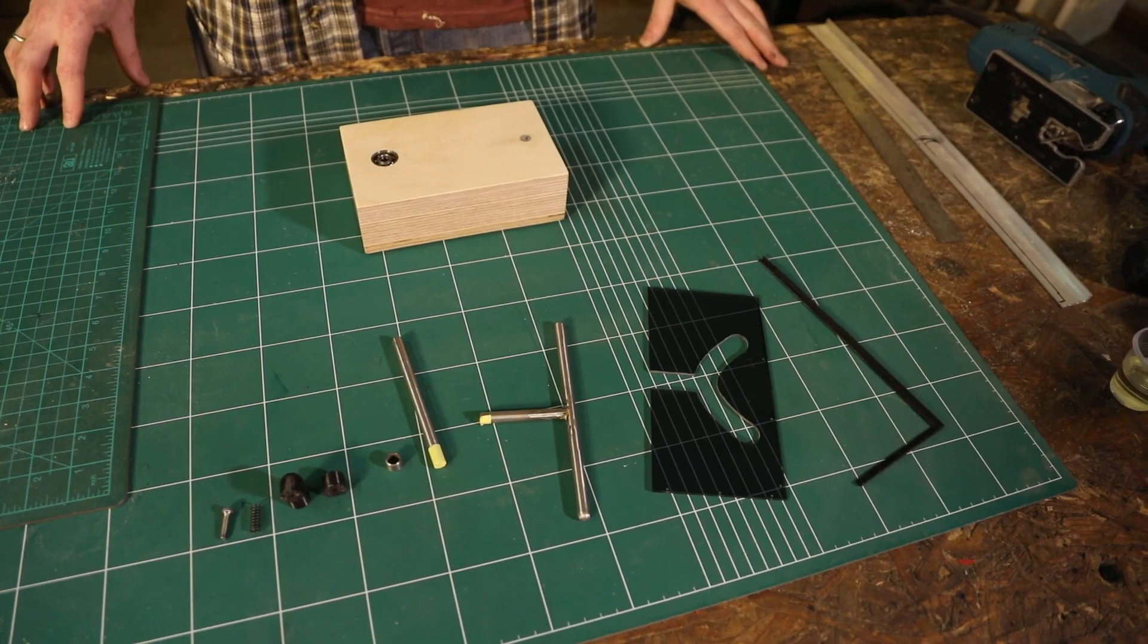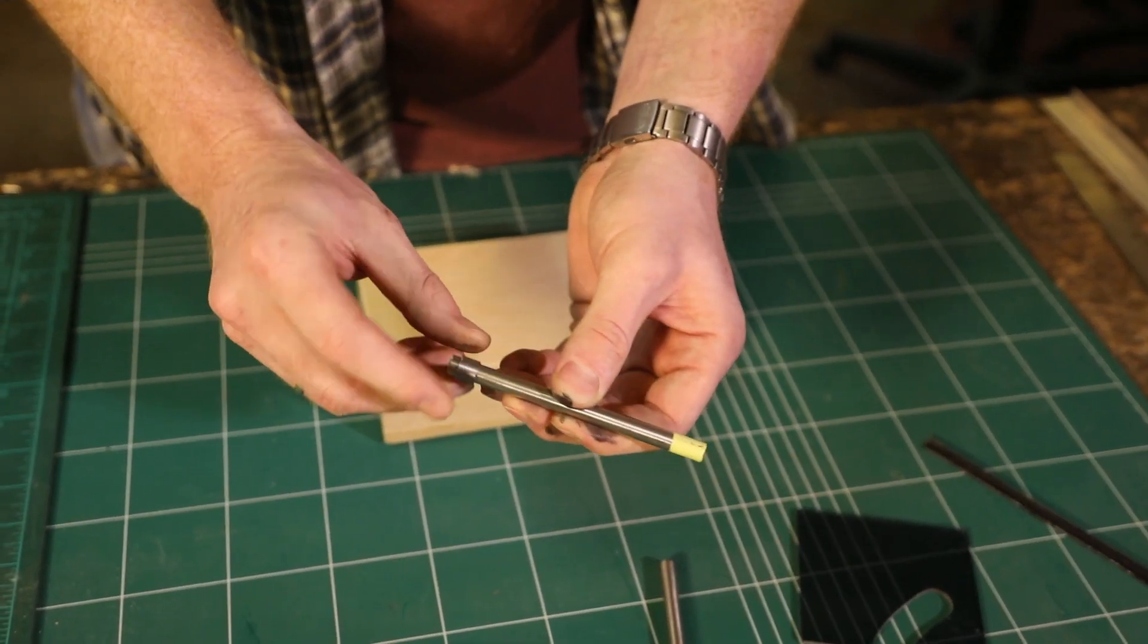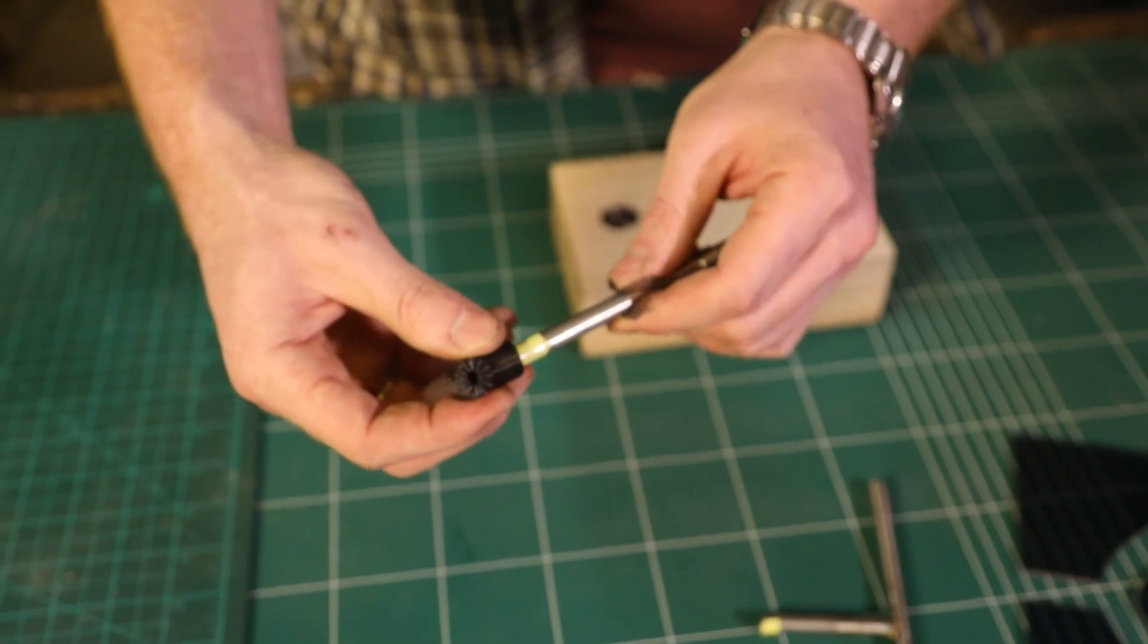Now, it's time to assemble everything together. On the main shaft, I slid a small piece of tube with a tight friction fit. On the other side, I inserted a custom 3D printed connector that will connect the shaft to the T-shape we made earlier.